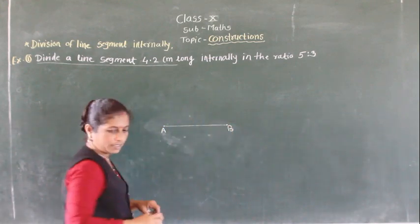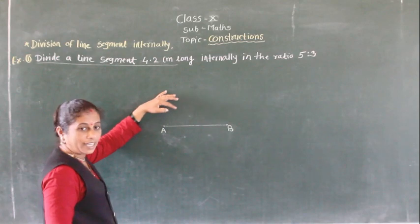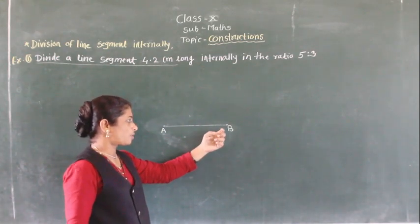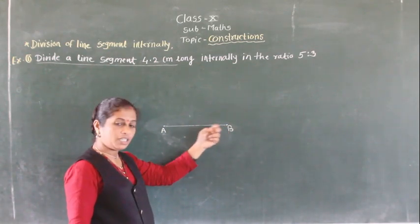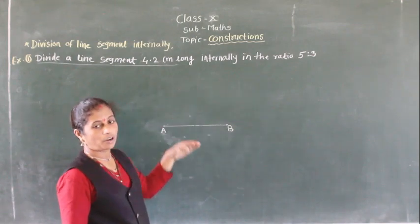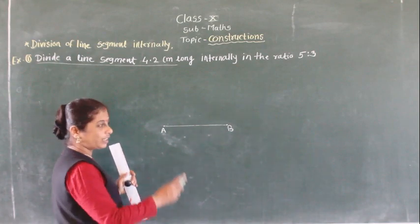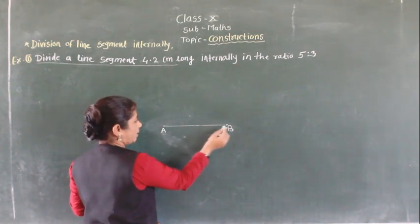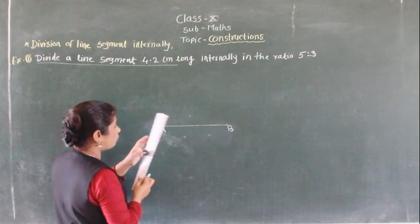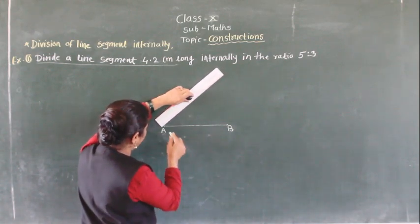Then we make an acute angle with this AB. So such that angle BAX — you can draw either upside or downside. You have to make one acute angle with AB, that is, angle BAX equals any acute angle.